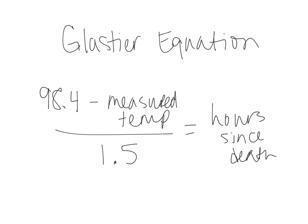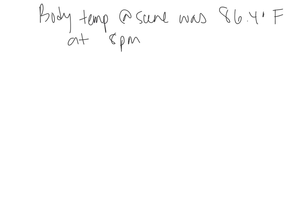For this review video we're going to go over time of death determination. The key thing you need to know is the Glaser equation and how to use it. The equation is 98.4 minus the measured temperature at the crime scene — either liver, brain, or rectal temperature — divided by 1.5. That gives us the hours since that person died. The 1.5 means the body cools one and a half degrees per hour after death.